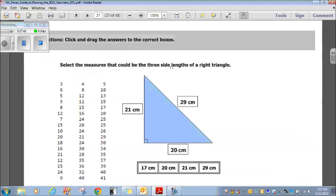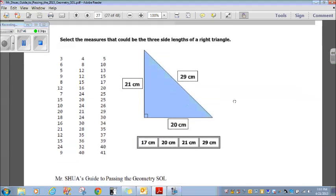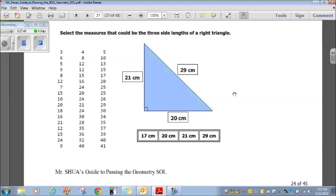Directions. Click and drag the answers to the correct boxes. Select the measures that could be the three sides of a right triangle. So, when we're dealing with right triangles, we're dealing with Pythagorean triples. And I've listed a few of the more popular Pythagorean triples here. And you see 20, 21, 29 fits right in here. Now, if you aren't familiar with Pythagorean triples, then you'd have to sit here and plug in each one and see which one fits. I suggest it's more convenient to learn a few. You don't have to learn them all, but learn a few of these more popular Pythagorean triples, because you may see a question like this on the SOL. And don't spend all day trying to do the A squared plus B squared equals C squared. Just memorize some Pythagorean triples and be on your way. All right. Let's move on.